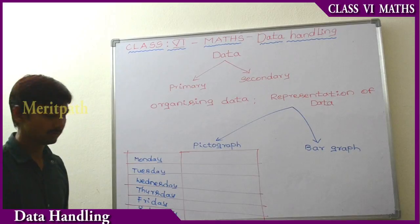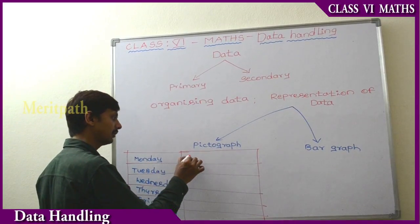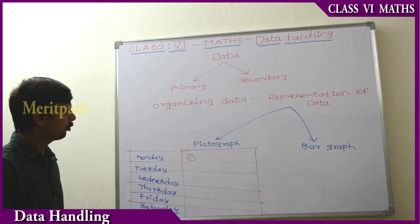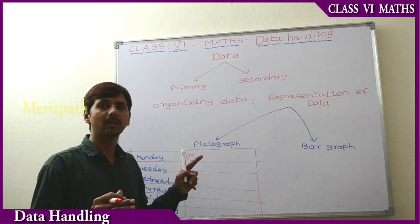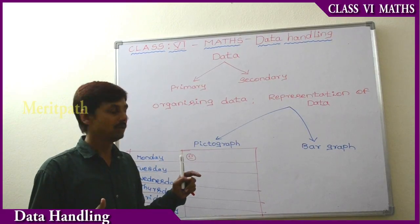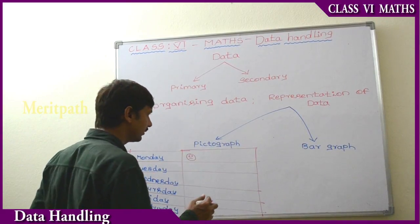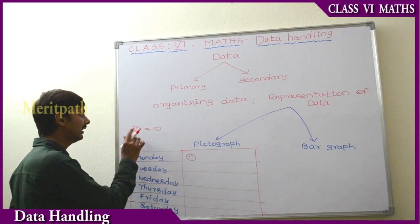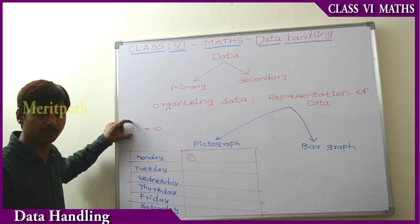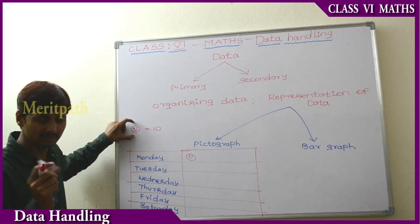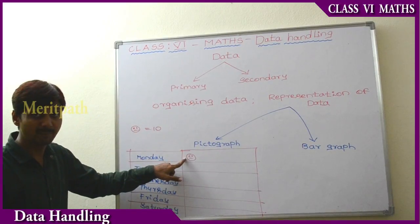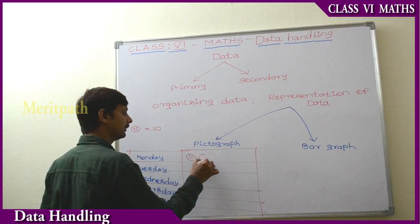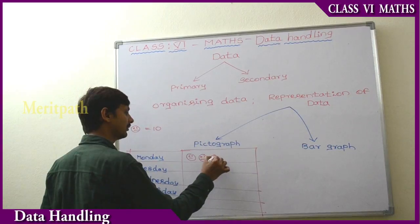On Monday, there are 10 students absent. To show that, we draw one picture — because drawing all individual pictures would be very difficult. So one picture represents 10 students. For 10 students absent, we draw one picture. On Monday, there are 30 students absent at school.